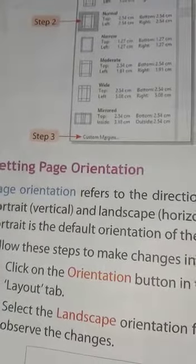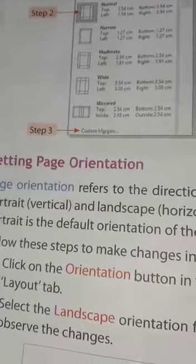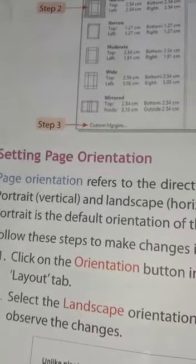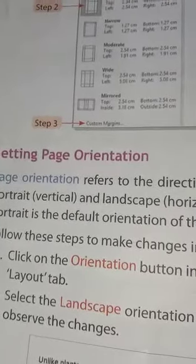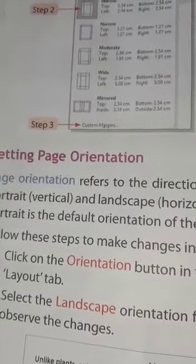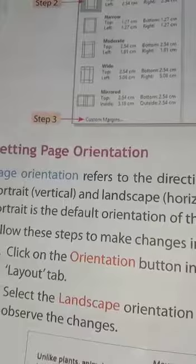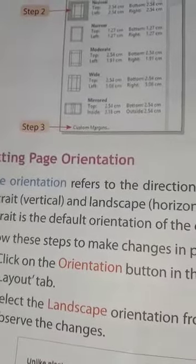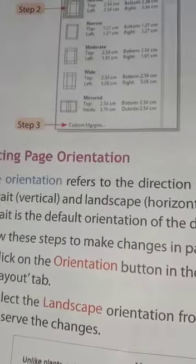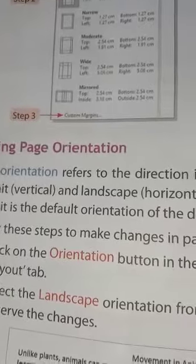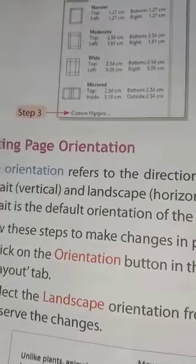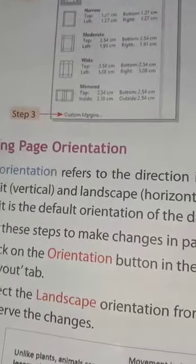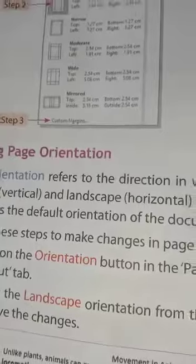Page orientation refers to the direction in which a document is displayed or printed. There are two types: portrait, which is vertical, and landscape, which is horizontal. You can see this in your mobile phone also. Portrait is the default orientation of the document — by default, documents are set to portrait.